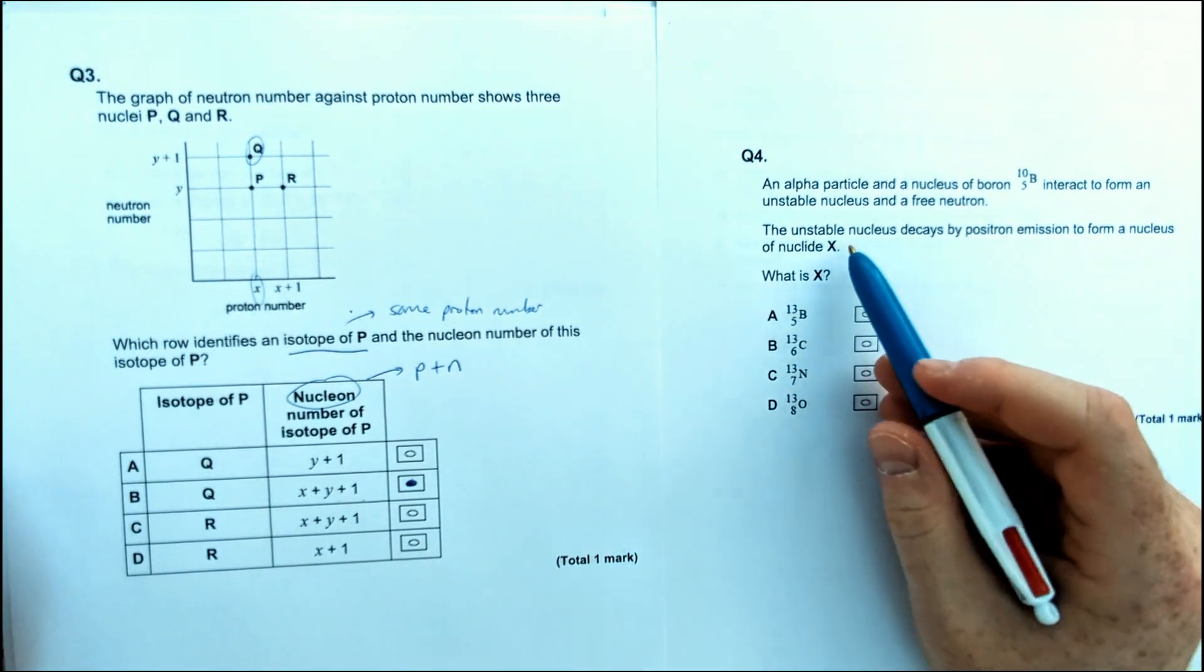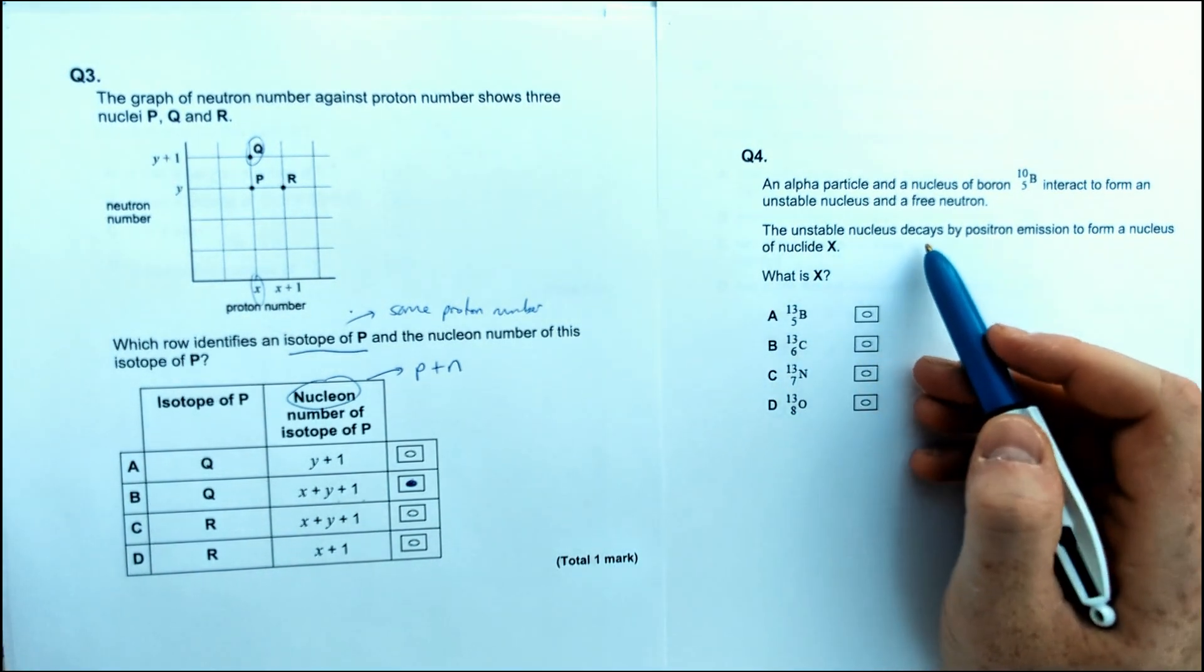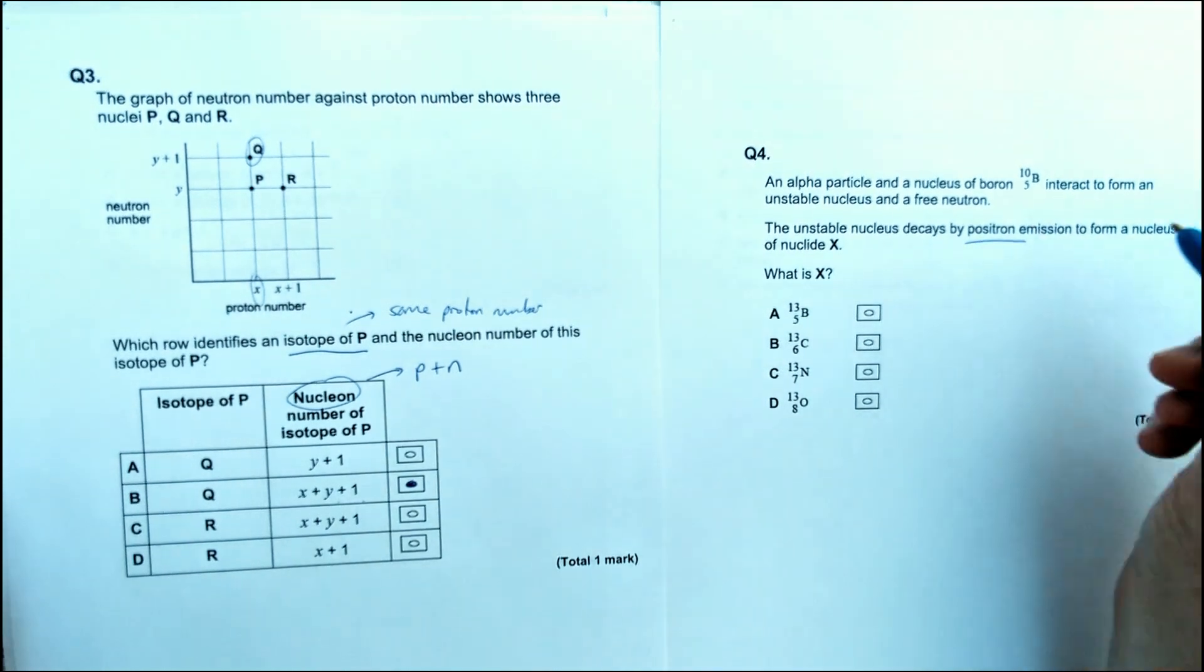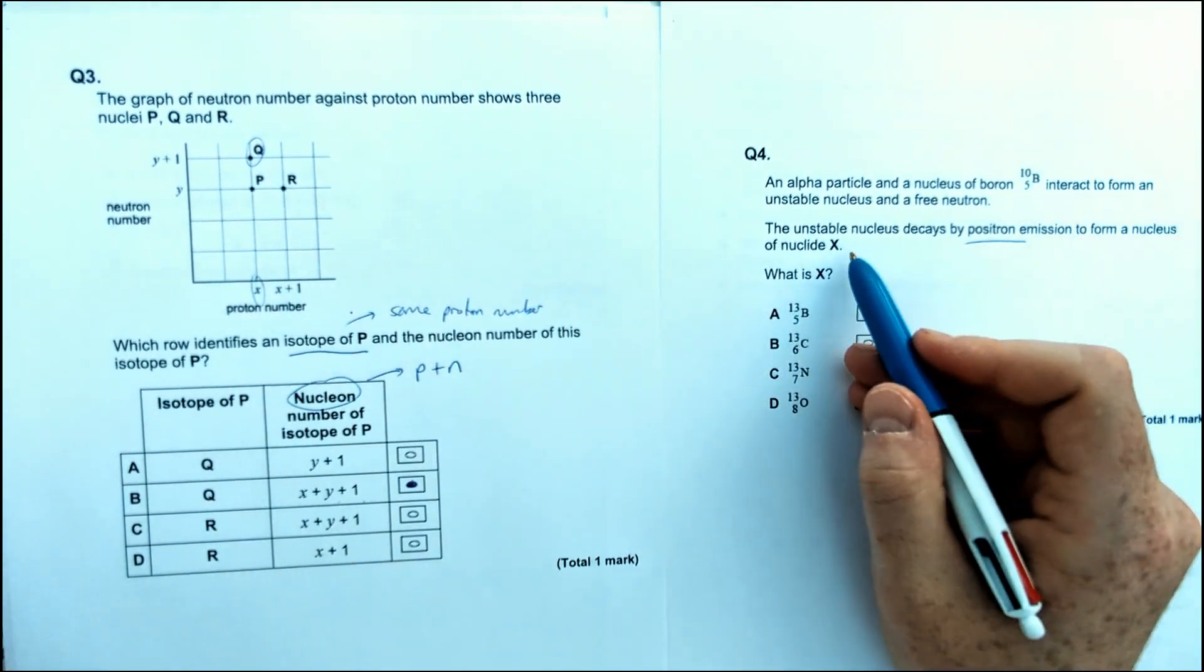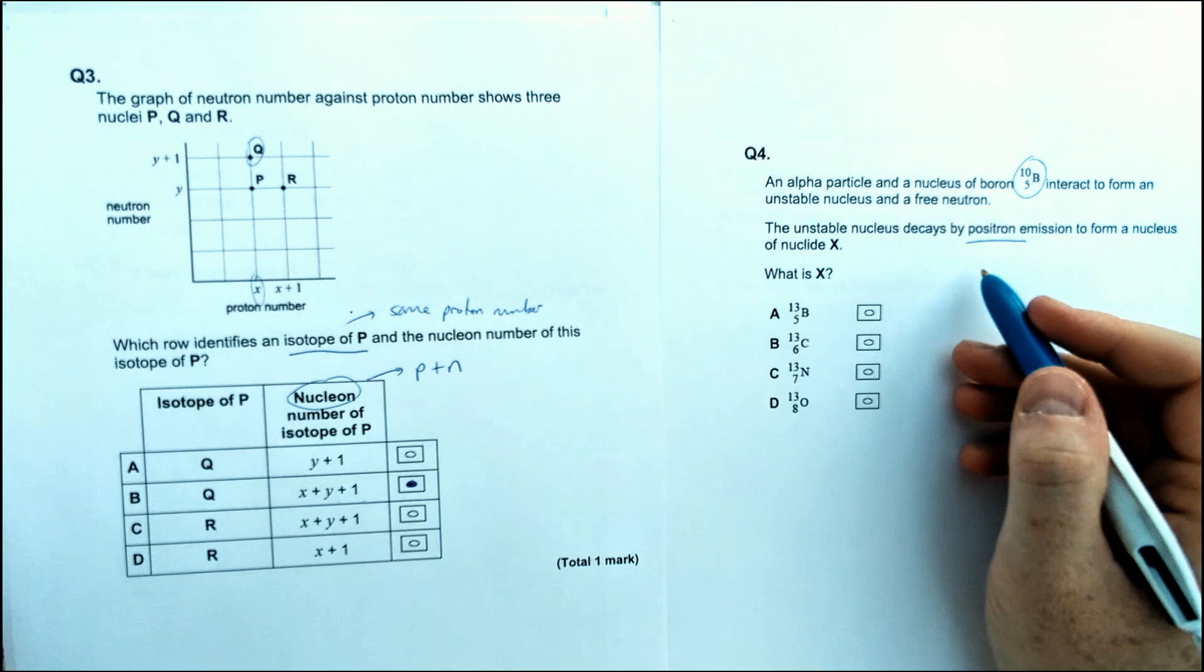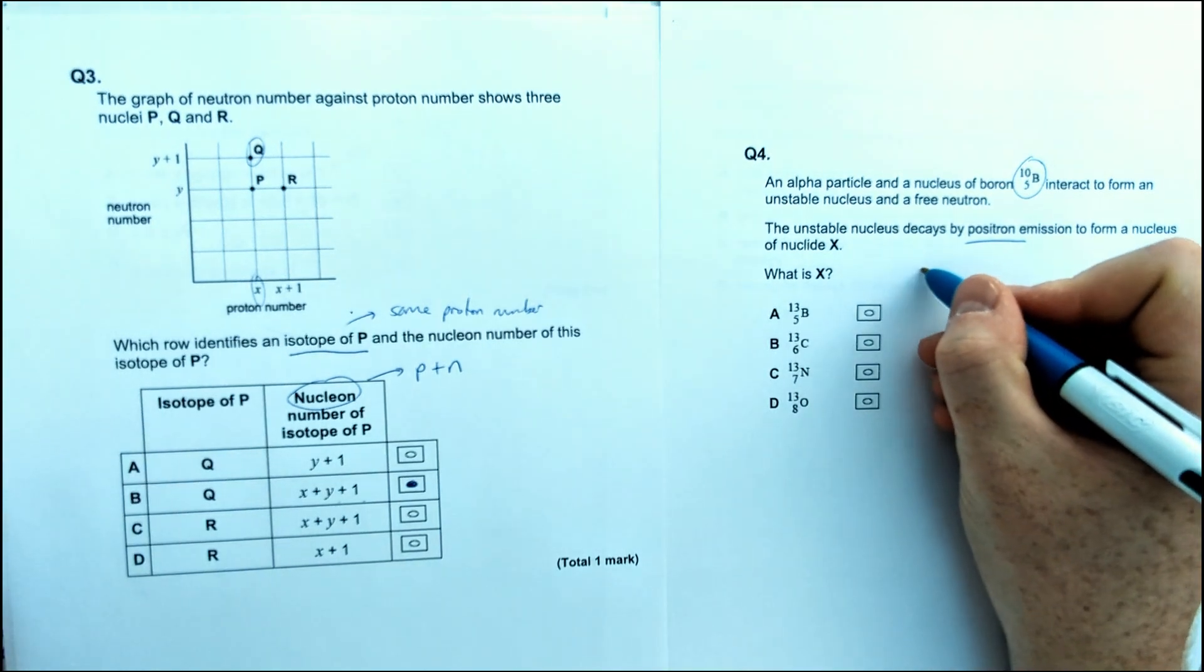Next one, we've got an unstable nucleus in this question. It decays by positron emission to form a nucleus X. It starts off as boron. Now, positron emission, we should know how that gets caused.